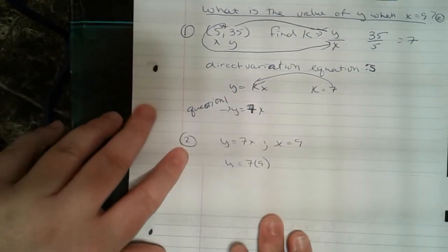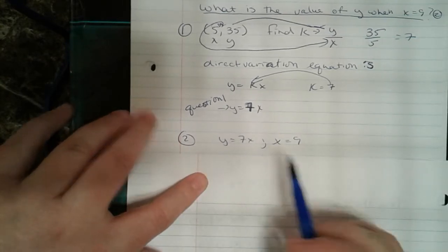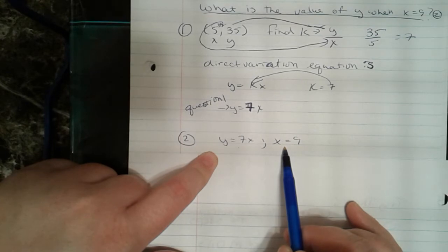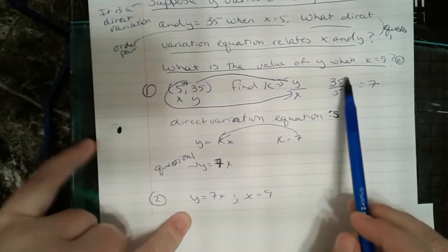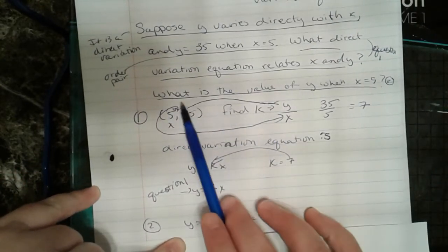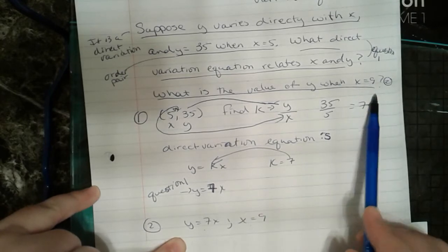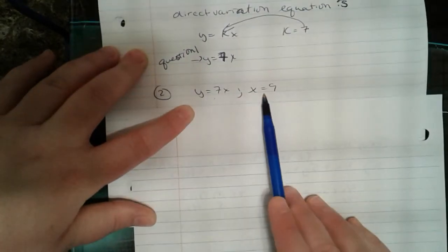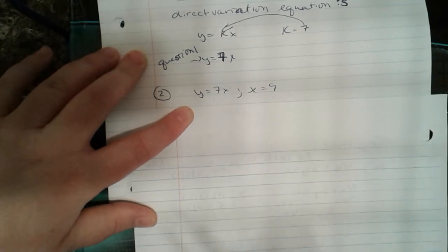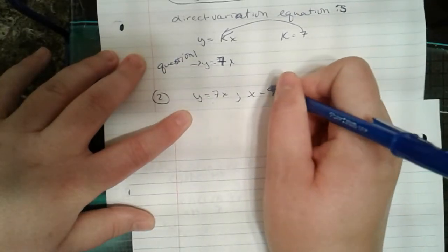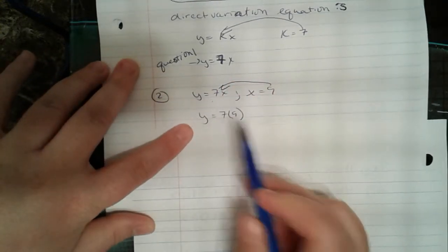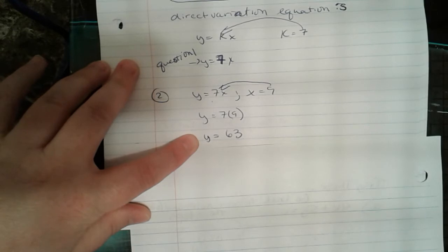For question 2, since we have our direct variation equation, what is y when x is 9? I can plug 9 in for x. I get y equals 7 times 9, so y equals 63.